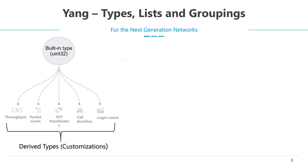Yang supports both built-in and derived data types. Built-in types are the base data types which are available for use by various applications. For example, as you see here, an unsigned integer of 32 bits can be used for different networking applications. The derived types are nothing but customizations of the built-in data types. The customizations become necessary depending on the application for which a particular data element is used.